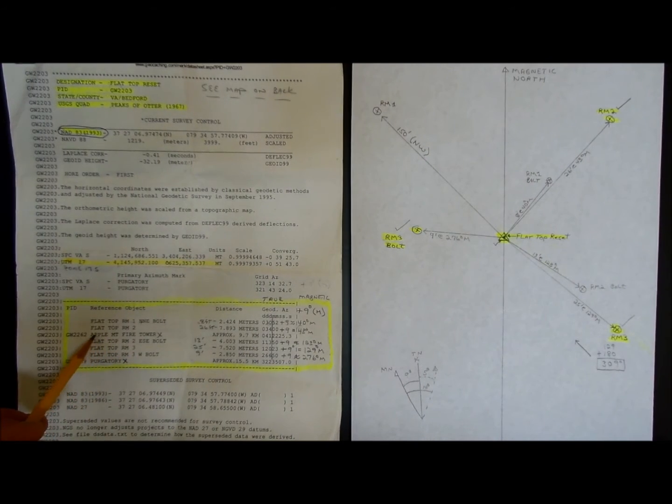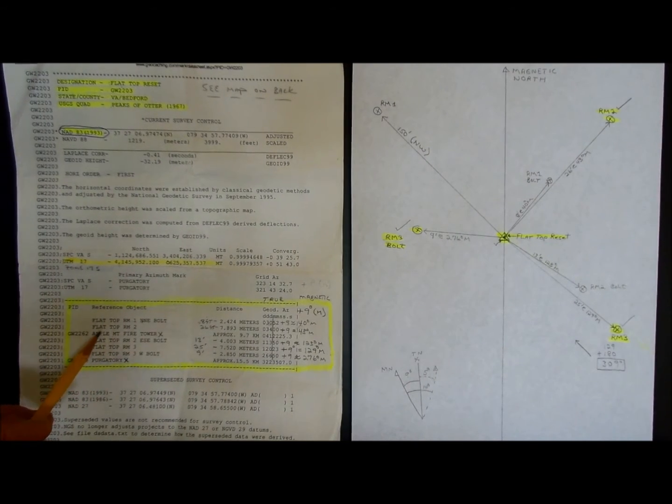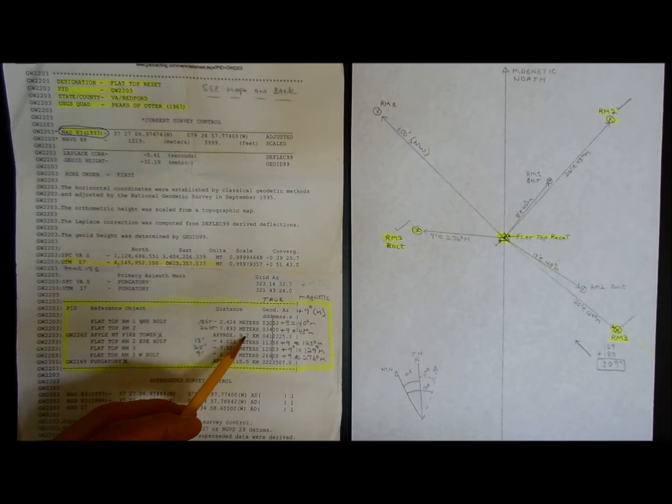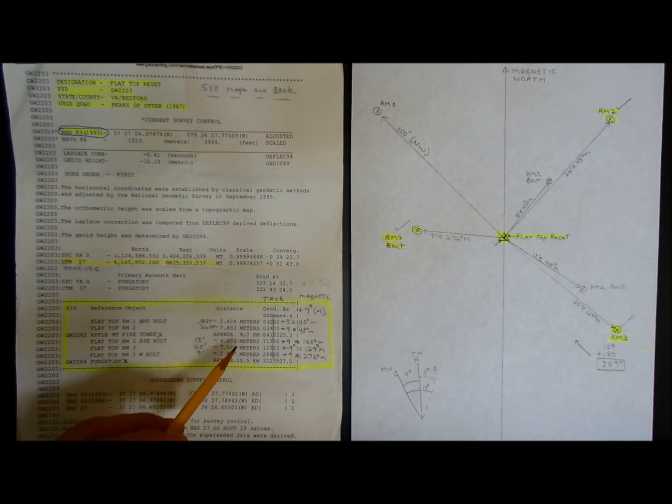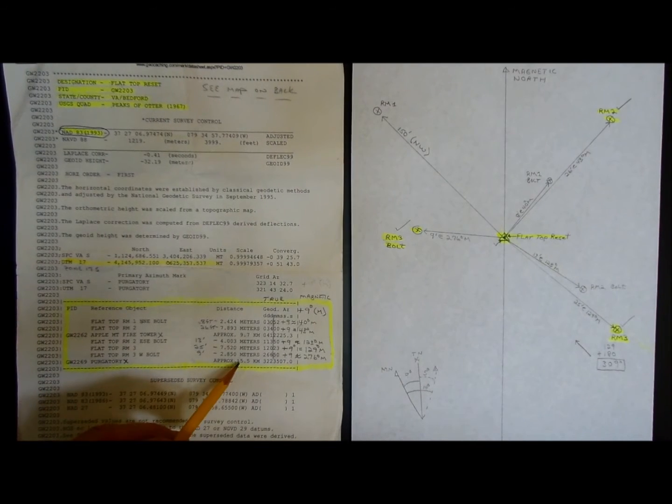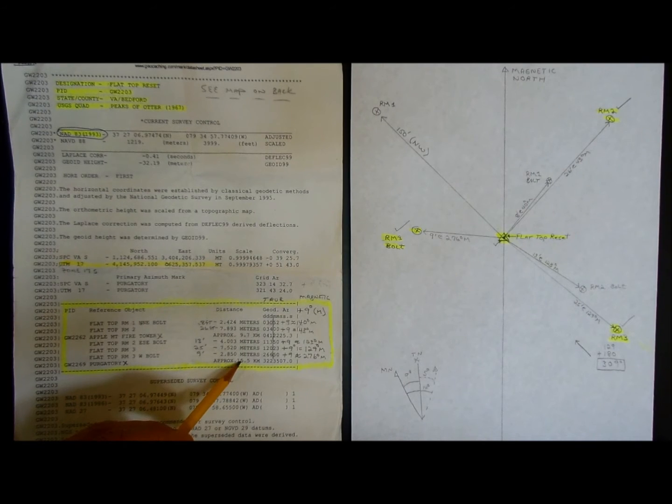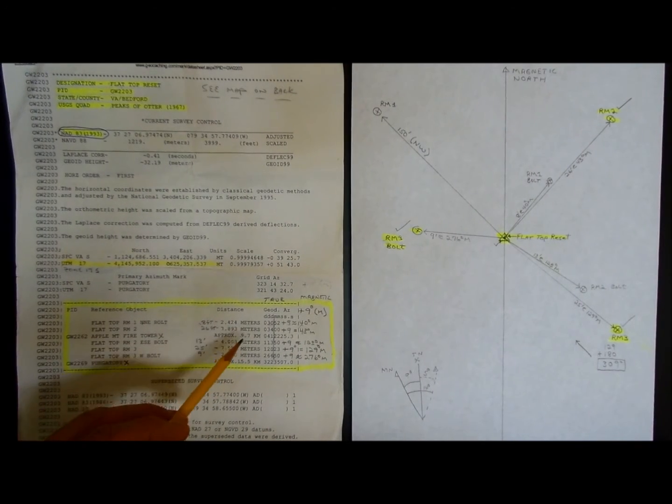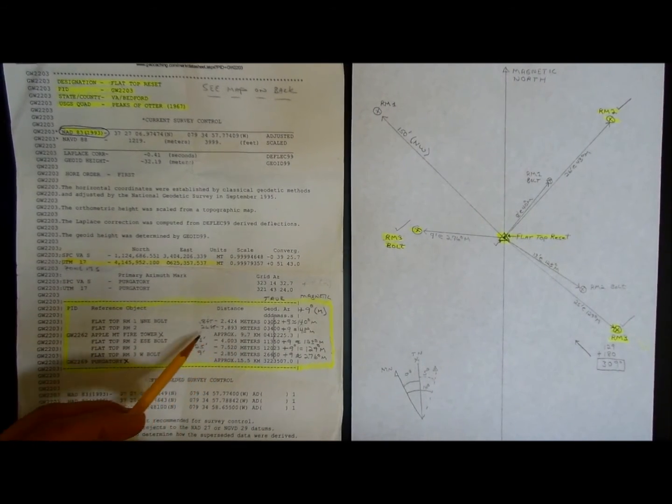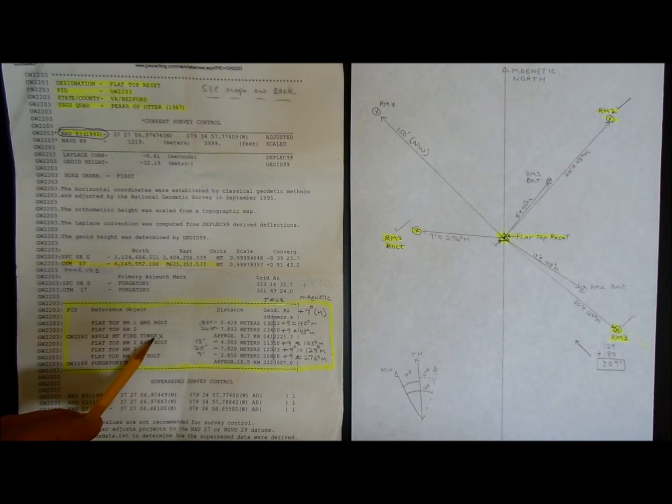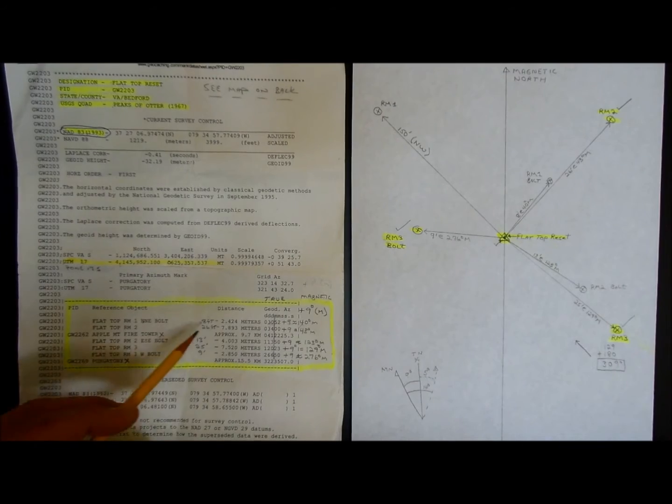Two of them I discarded. This one here is Apple Mountain Fire Tower. That's 9.7 kilometers away, and this Purgatory is 15 kilometers away. Those are too far away to be seen currently with all the overgrowth on the top of this mountain. When this thing was originally surveyed, they would have cut down the trees and the brush so they could see these objects. But nowadays, you can't see them.